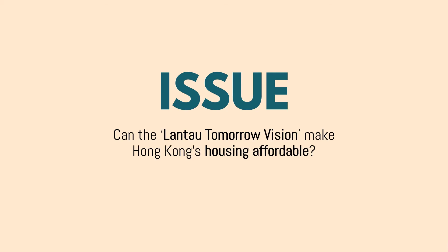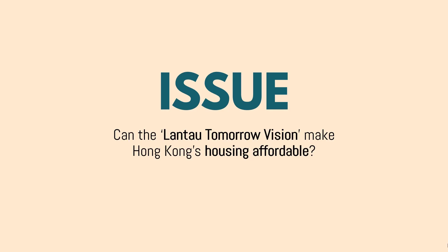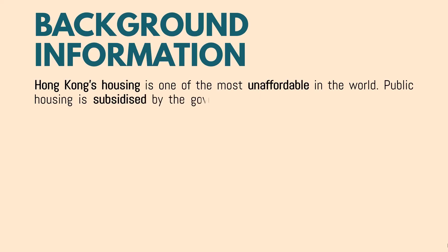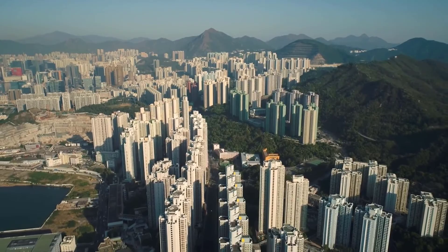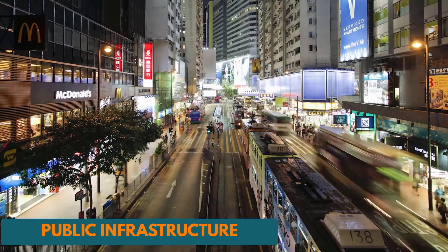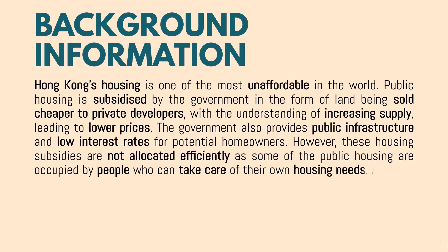Let's take a look at an example in a social study context. Before we actually start, we need to examine the issue. The issue showcases what you need to know about the source, which we will examine shortly. The issue is: can the Lantau Tomorrow Vision make Hong Kong housing affordable? It is about the housing issue, whether it is affordable for the people of Hong Kong. Let's take a look at the background information. Hong Kong housing is one of the most unaffordable in the world. Public housing is subsidized by the government in the form of land being sold cheaper to private developers with the understanding of increasing supply, leading to lower prices.